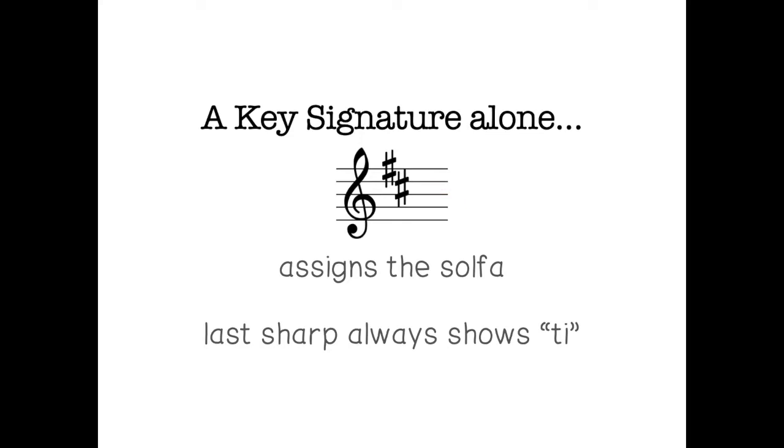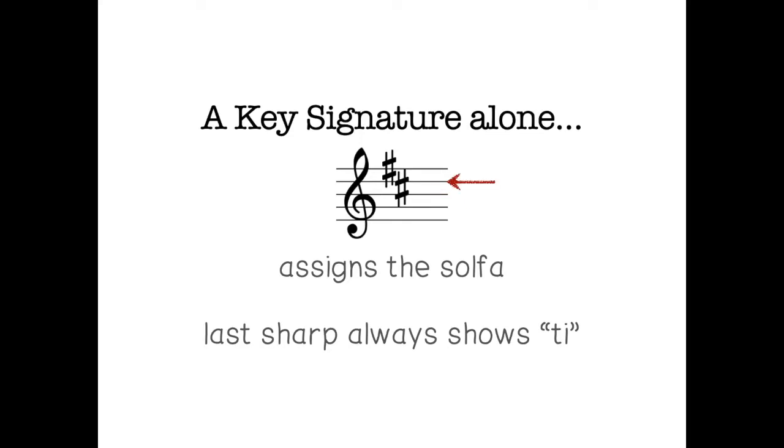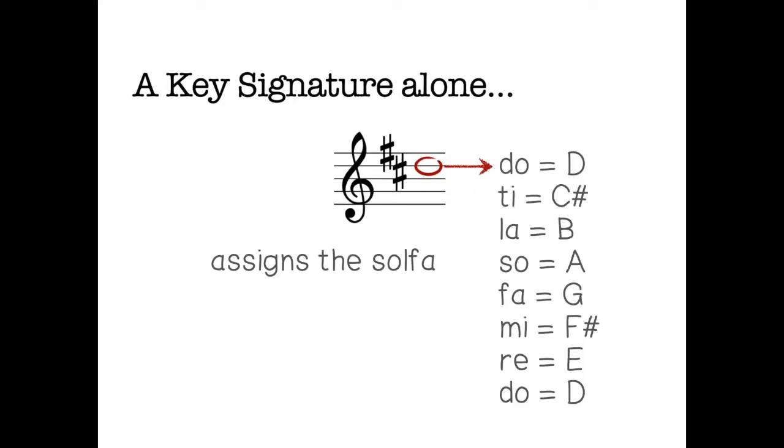We could use that if we wanted to find do, so we now know do is a D. But actually we could use that to find any note in this key. So if we know ti is a C sharp, do is a D, we also know all these notes as well. So the key signature assigns the solfa.